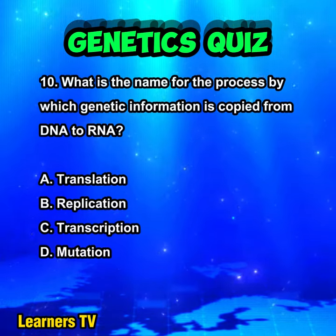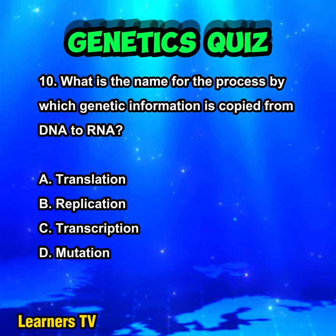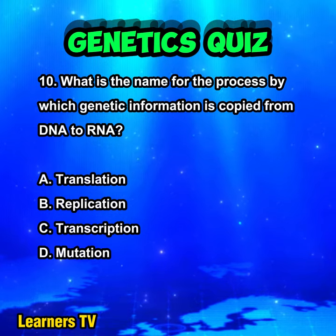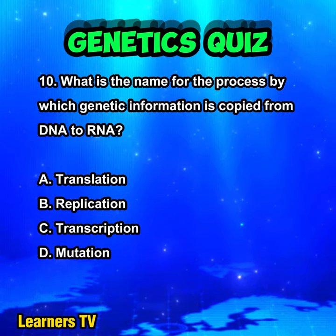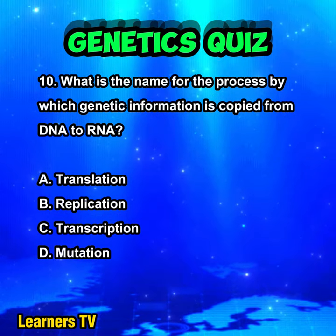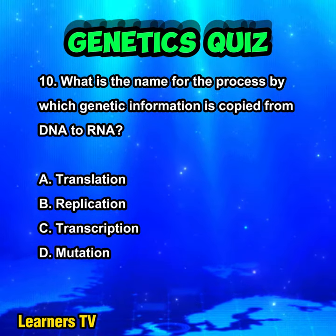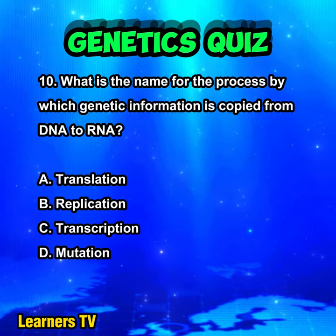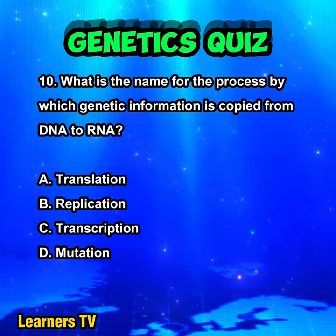What is the name for the process by which genetic information is copied from DNA to RNA? A. Translation. B. Replication. C. Transcription. D. Mutation.